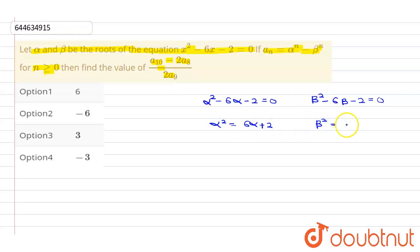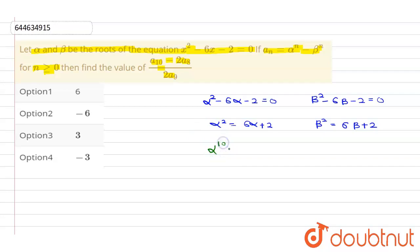Since we need a10, we need the 10th power of alpha and beta. Multiply both sides of the alpha equation by alpha to the power 8, giving alpha to the power 10 equals 6·alpha to the power 9 plus 2·alpha to the power 8. Similarly, beta to the power 10 equals 6·beta to the power 9 plus 2·beta to the power 8.